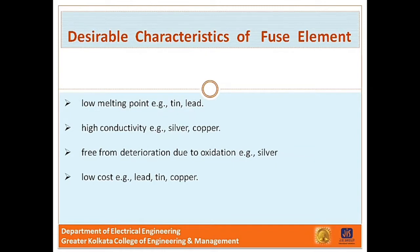Next are the desirable characteristics of a fuse element. The function of a fuse is to carry normal current without overheating, but when the current exceeds its normal value, it rapidly heats up to melting point and disconnects the circuit. To perform this function satisfactorily, the fuse element should have certain characteristics. The first characteristic is a low melting point — for example, tin and lead. The next is high conductivity — for example, silver and copper.